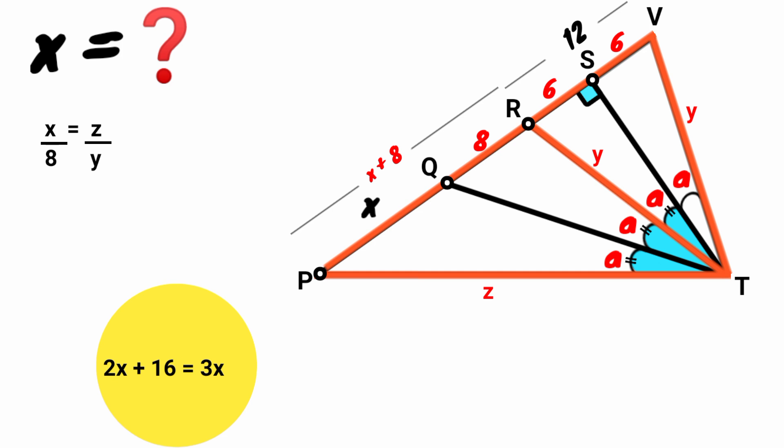Here x plus 8 multiplied by 2 is 2x plus 16, while 3 times x is 3x. So 2x plus 16 equals 3x.